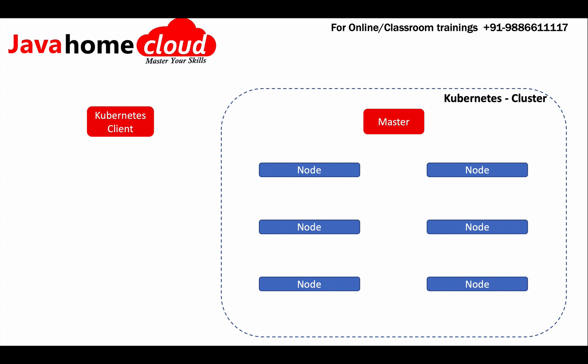At a high level, a Kubernetes cluster is composed of master nodes and worker nodes. The master receives instructions from the Kubernetes client and issues those instructions to the nodes to perform a specific task in the cluster.